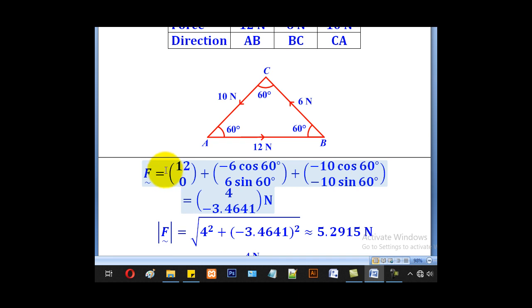The next step will be now converting them to vector form, in other words, resolving horizontally and vertically. So 12 is entirely horizontal, so it will be 12, 0. 6 is at an angle, so horizontally it will be negative 6 cos 60, and vertically it will be positive 6 sin 60. Negative because it's going to the left, positive because it's going upwards.